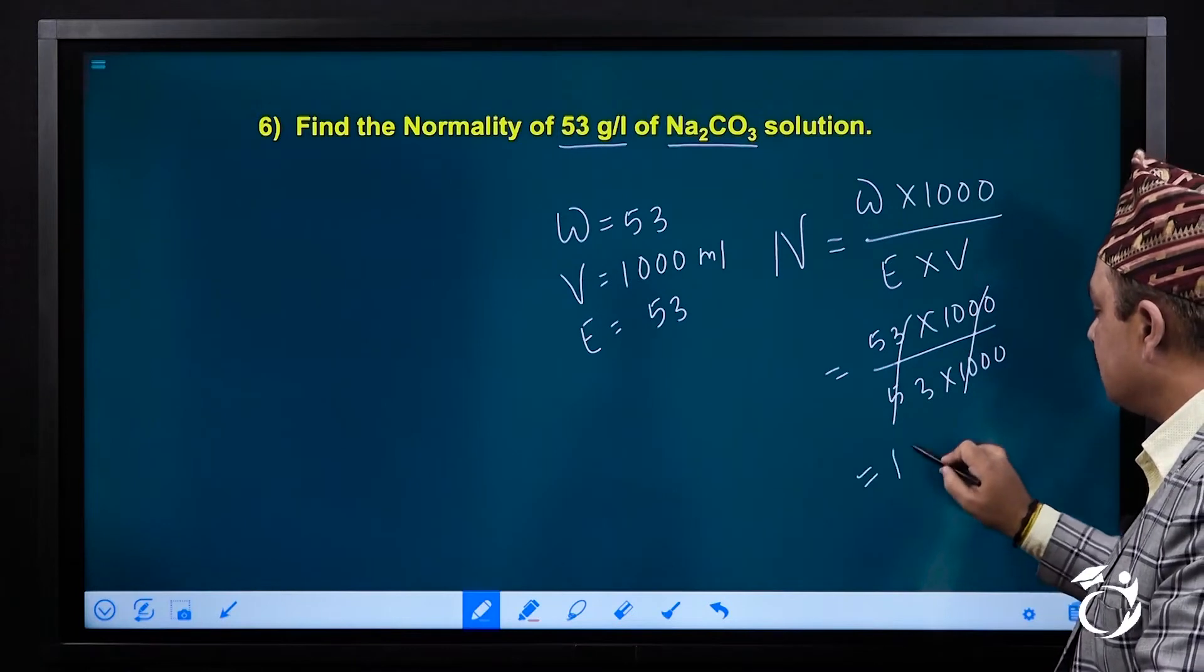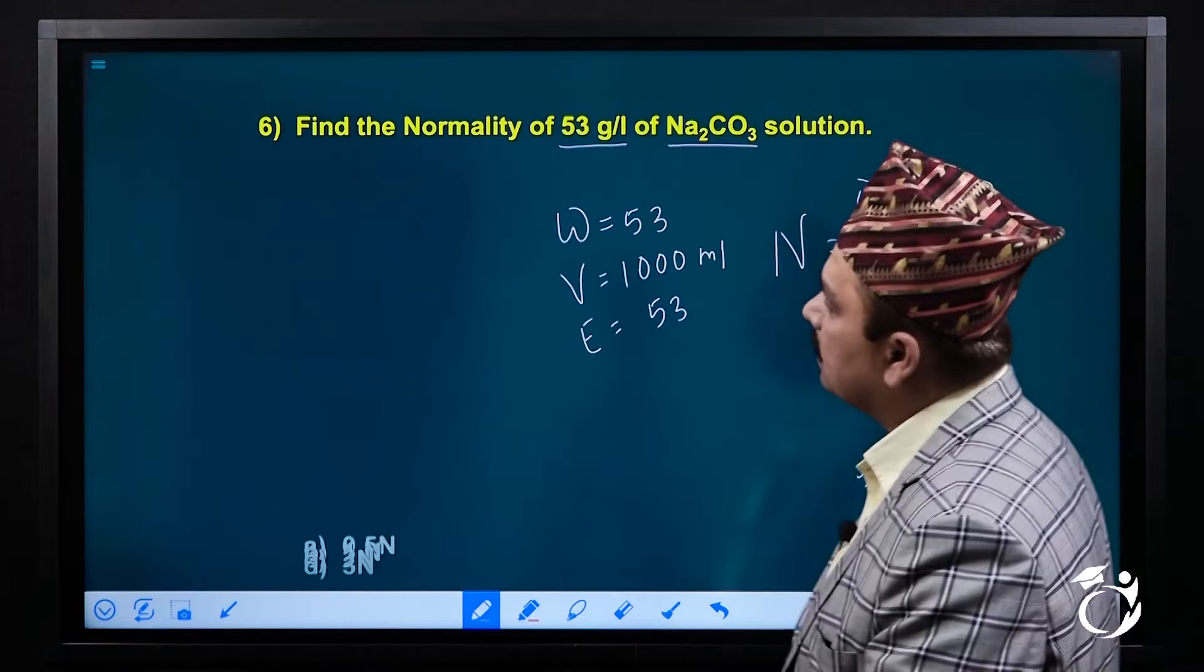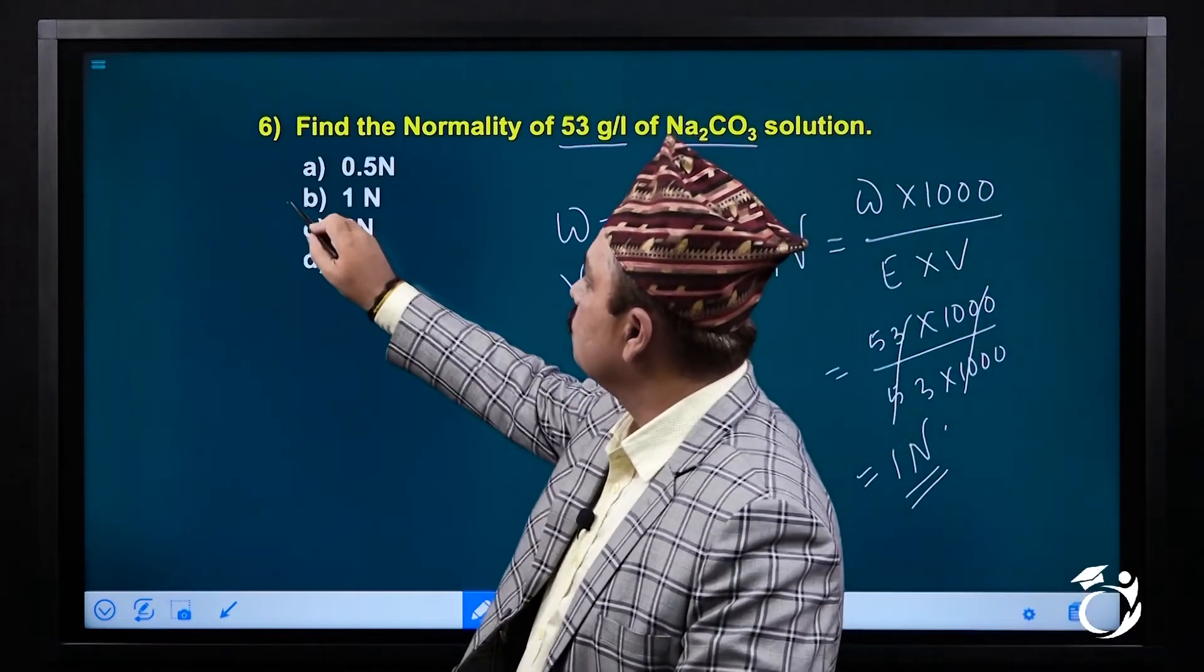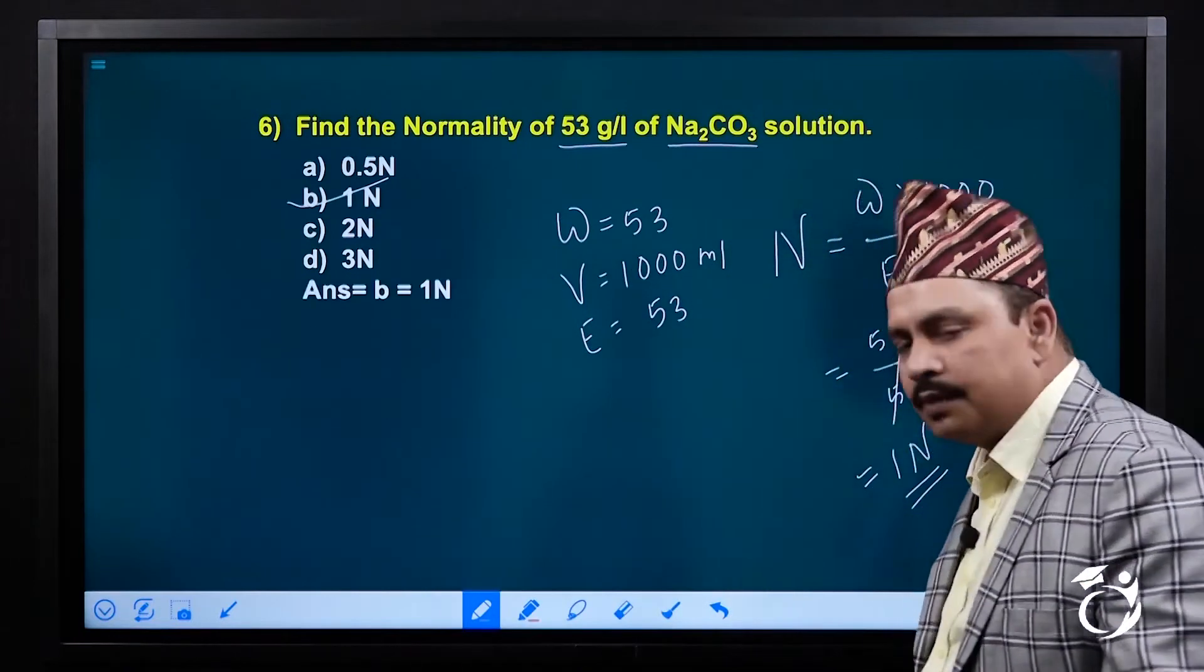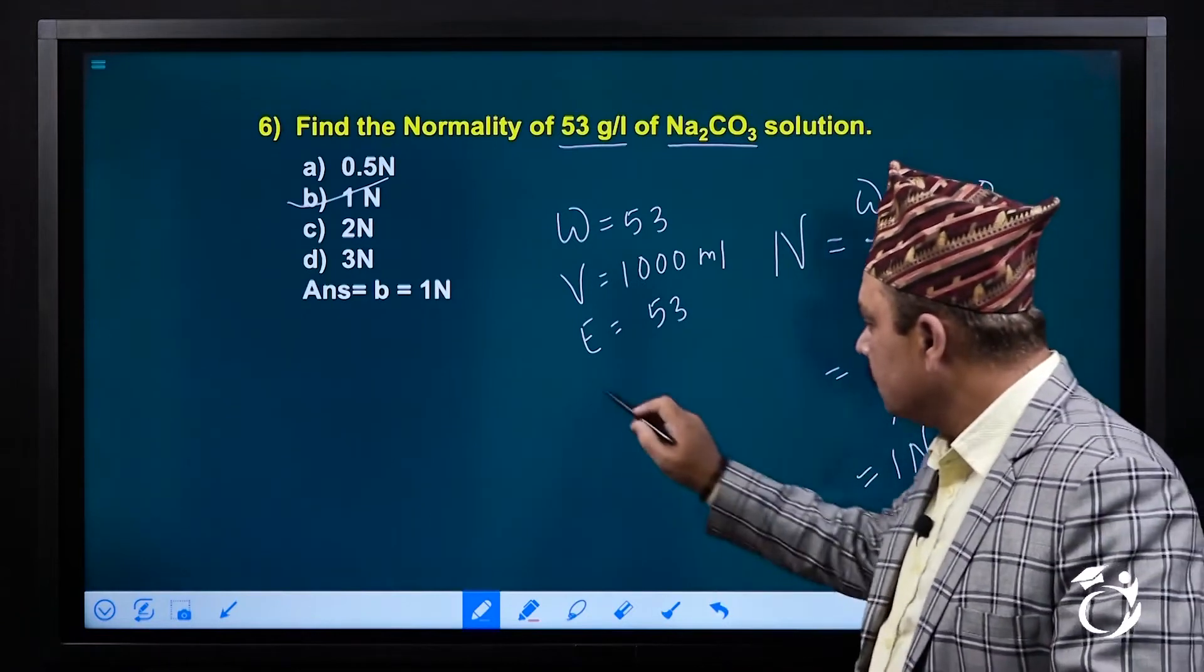So this is 1N. The options are 0.5N, 1N, 2N, 3N, so this option is B. The answer is B, so 1N here is 1N.